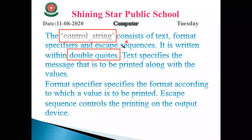Format specifier specifies the format according to which a value is to be printed. For example, if we have to print the value 10, the format specifier tells us to print an integer value. If we have 15.5, it tells us to print a floating point value. Format specifier also tells you to print a character. So format specifier is used to specify the format according to which the value is to be printed on your screen.